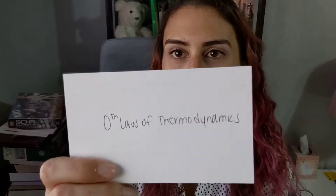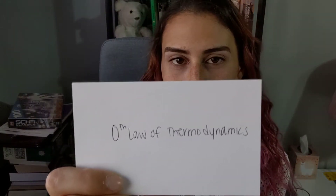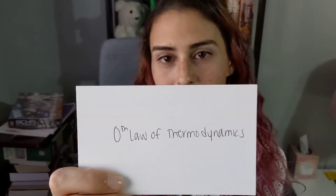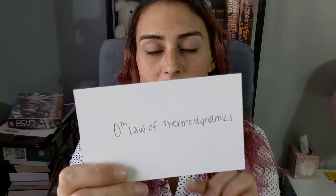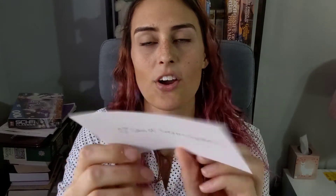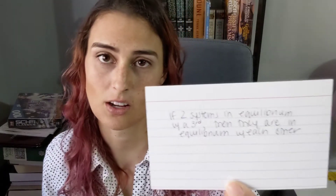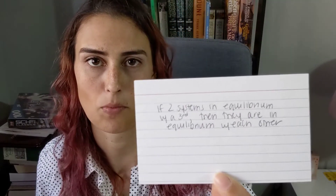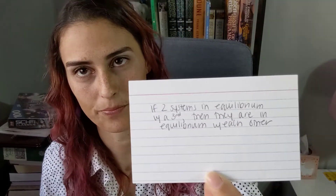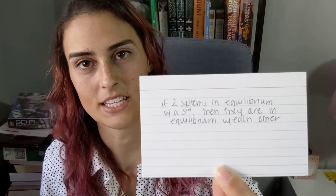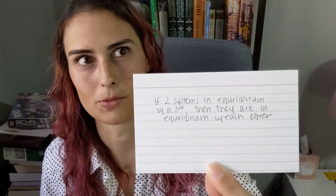The zeroth law of thermodynamics says that if two systems are in equilibrium with a third, then they are also in equilibrium with each other — and this is why thermometers work.